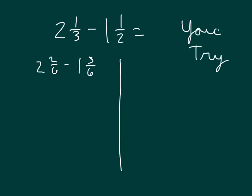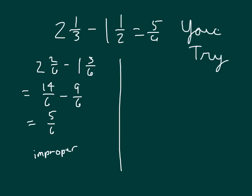Here's 2 and 2 sixths minus 1 and 3 sixths. One approach could be using improper fractions: 2 times 6 is 12 plus 2 is 14, so that would be 14 sixths minus 9 sixths. Solving that, we would get 5 sixths. So one approach is to rewrite each as improper fractions and then subtract. Make sure to simplify and write them back in simplest form.